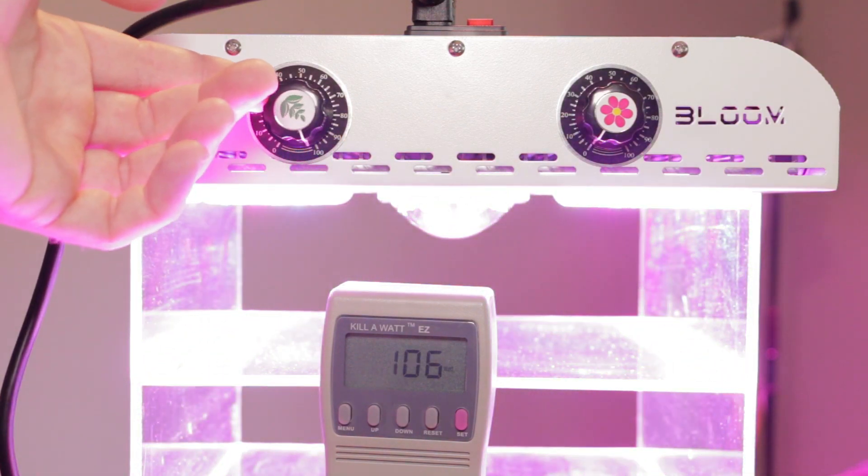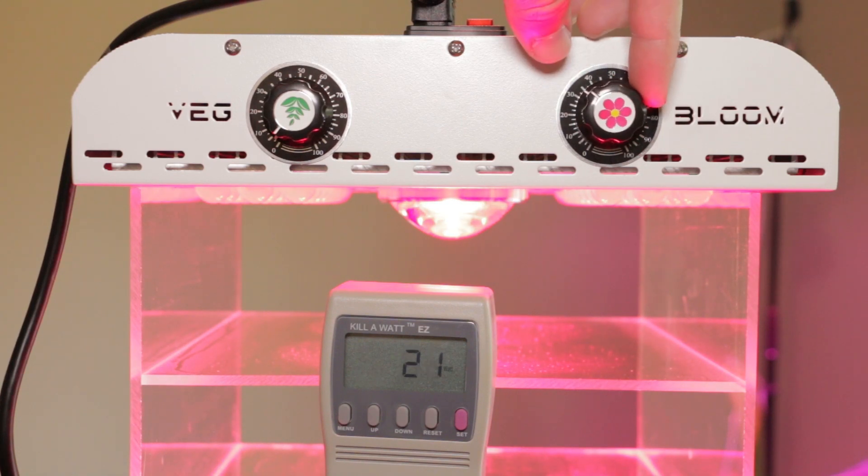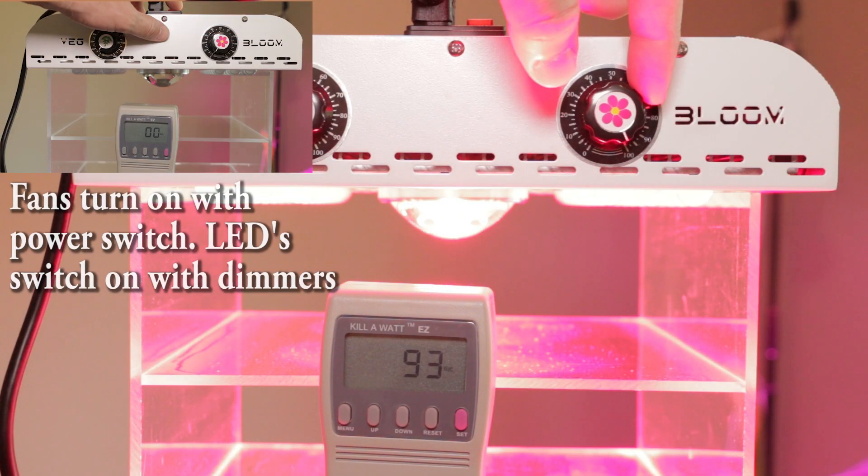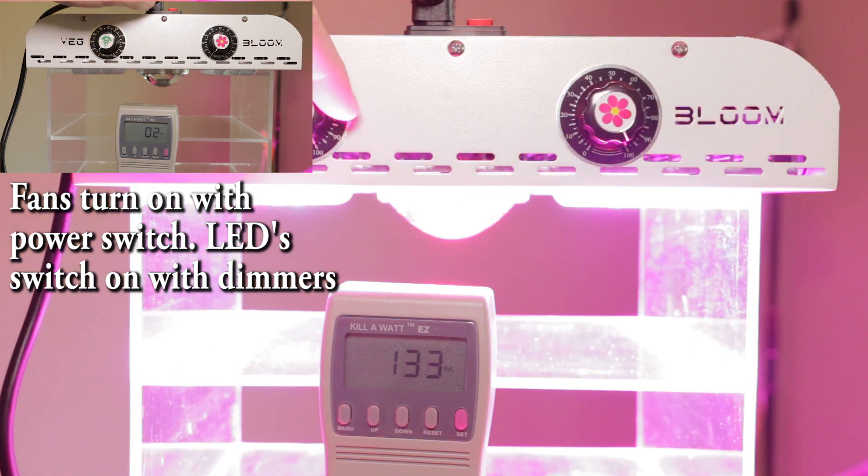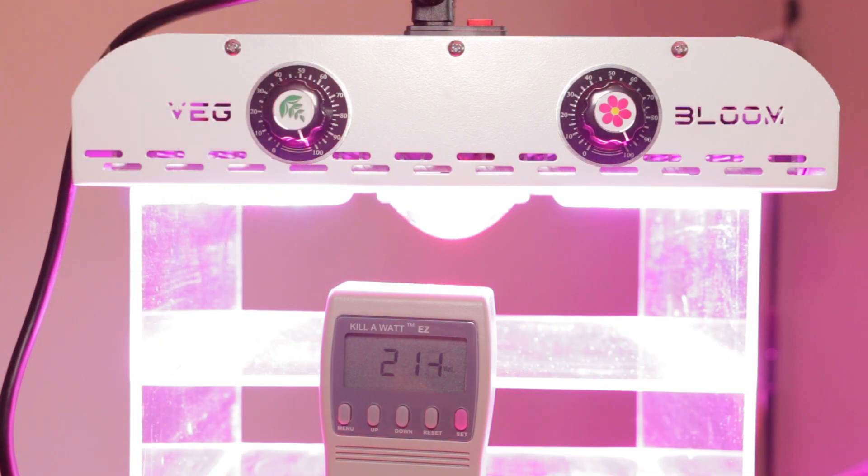Both sets of LEDs consume around 100 watts with the two cooling fans running around 8 watts in total. The two red LED cobs consume about 10 watts more at max output versus all the LEDs used for the vegetative stage. So the total output for this light is around 217 watts.